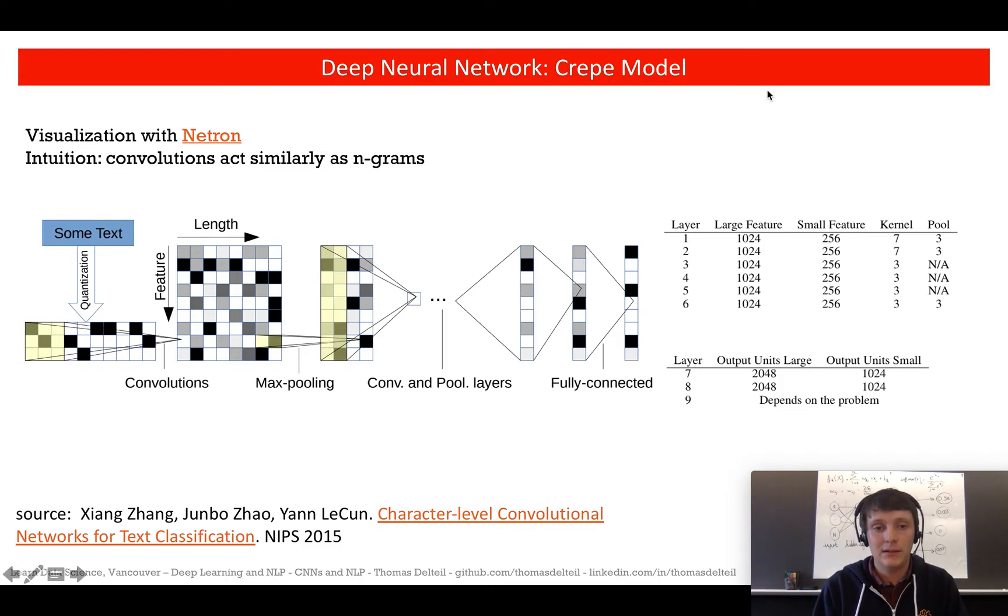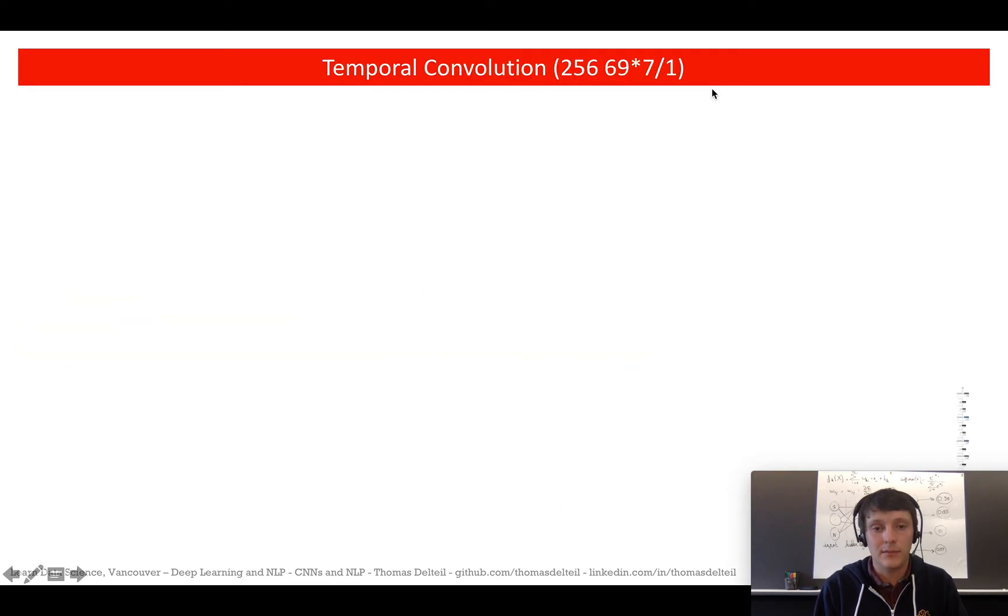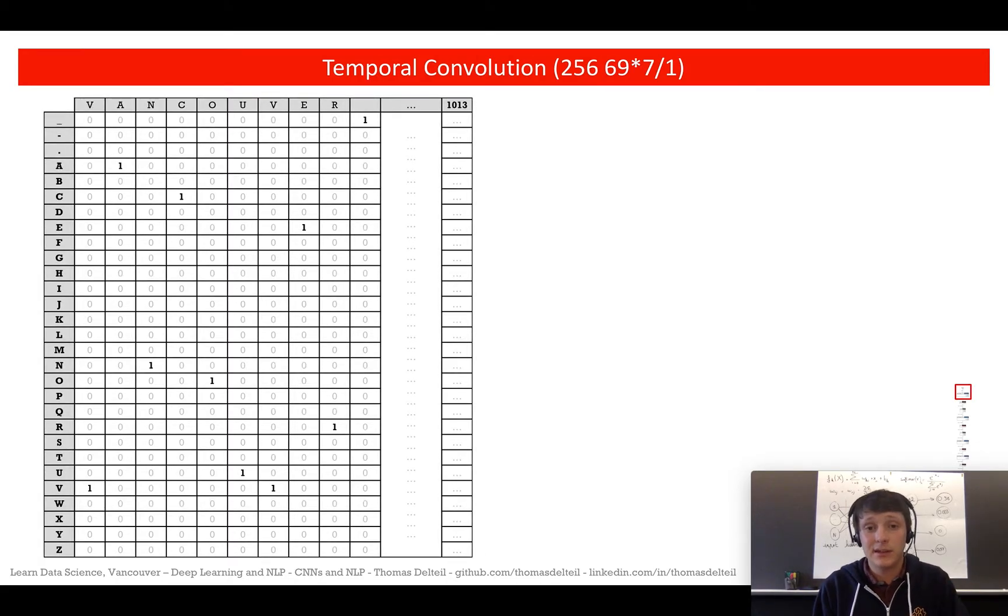Let's see how we're going to follow what happens to a document, from text all the way to the end to classification, just to understand really how this convolution works with text and how the network works. So first you get your text. Let's say here in Vancouver. It gets encoded the same way as in the previous slides and we're going to use the same numbers as in the paper.